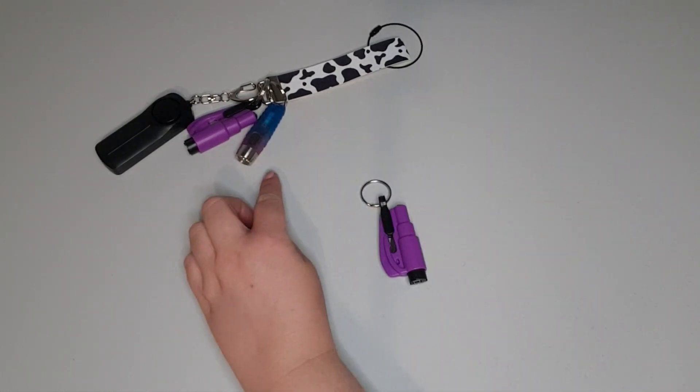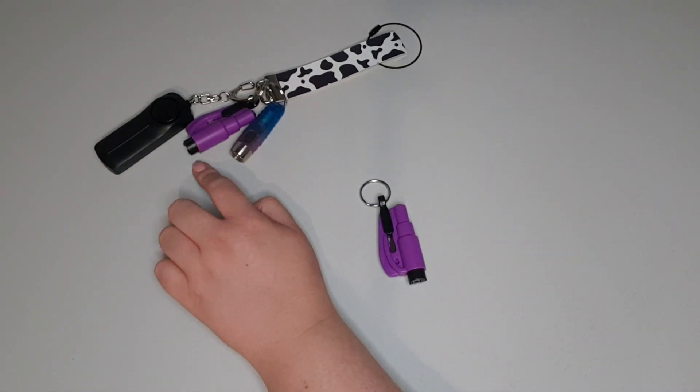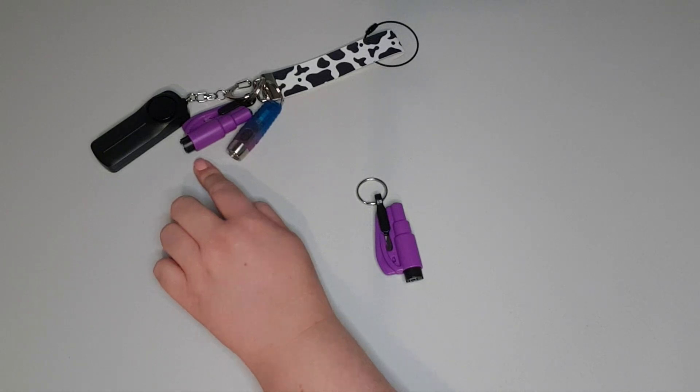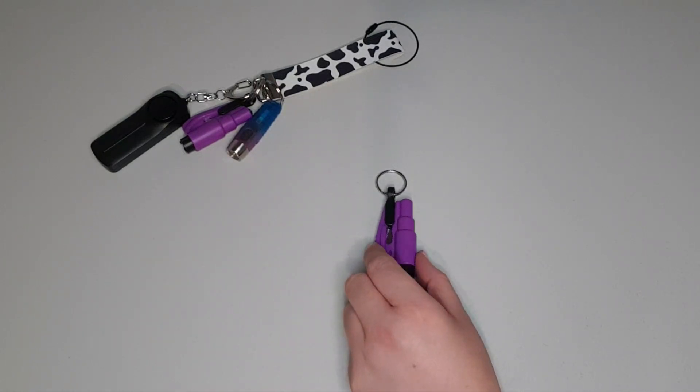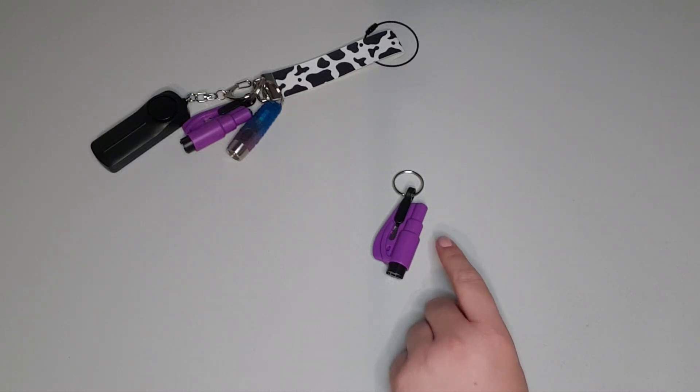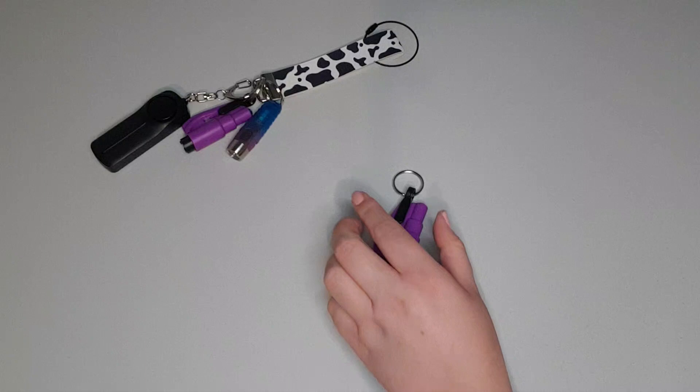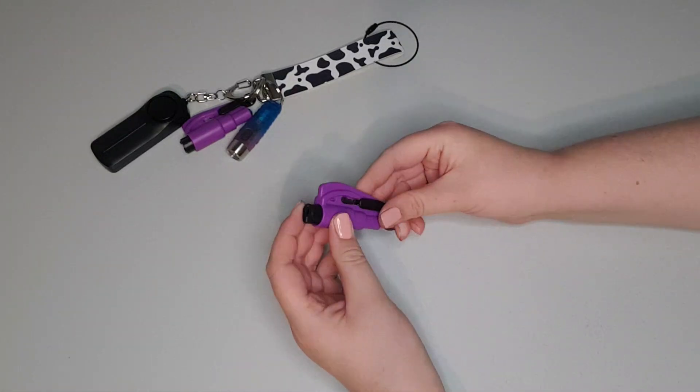So the second component on our keychains is this emergency car tool. This is what everyone should have on them if they're in a car, whether you're a driver or a passenger, because this is a really cool tool to have. So what it is, it's dual.